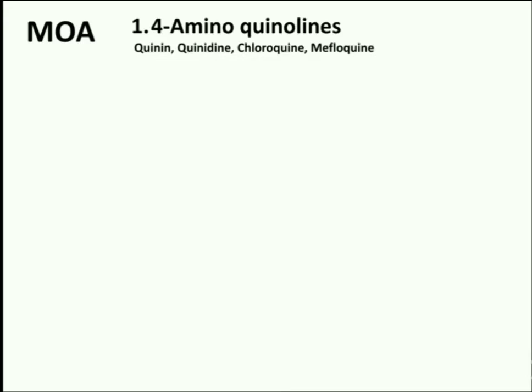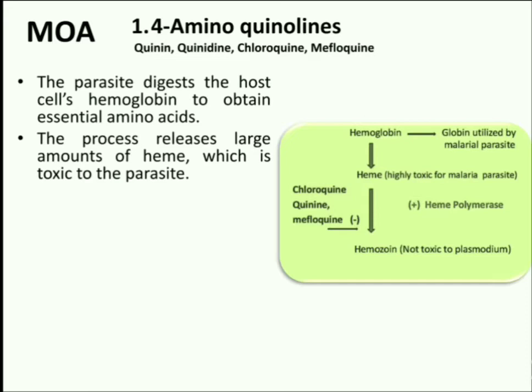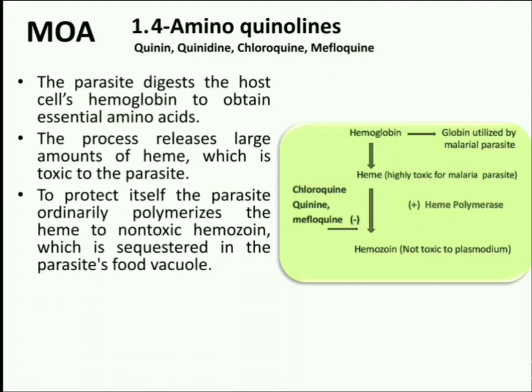First is Modification of 4-Aminoquinolines. Important antimalarial drugs belonging to this category are quinine, quinidine, chloroquine, and mefloquine. These drug candidates have almost similar mode of action. After malarial infection, the parasite digests the host cell hemoglobin to obtain essential amino acids. This process breaks the hemoglobin into heme and globin, which results in release of large amounts of heme, which itself is toxic to the parasite.